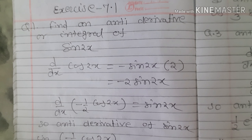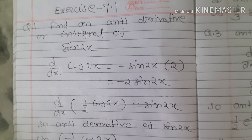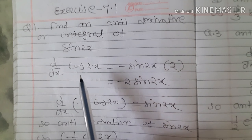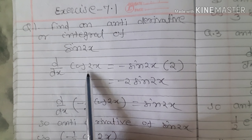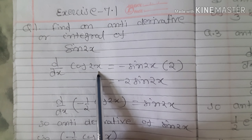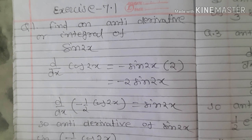We are solving Exercise 7.1, Question 1: find the antiderivative of sin 2x by the method of inspection — meaning find the function whose differentiation equals sin 2x. We differentiate cos 2x: applying d/dx of cos x = -sin x, d/dx of cos 2x equals -sin 2x times the derivative of 2x, which is 2, giving -2 sin 2x.